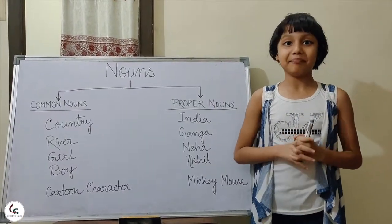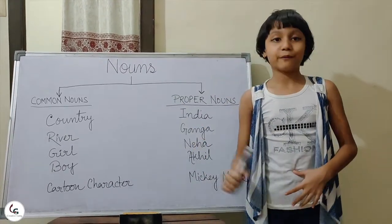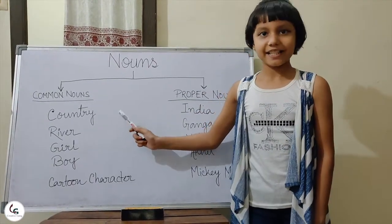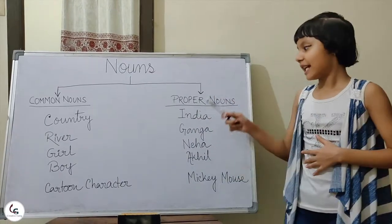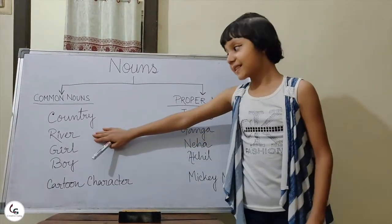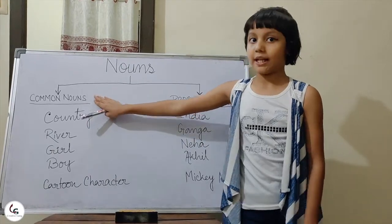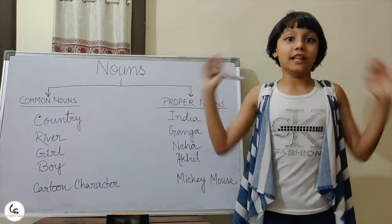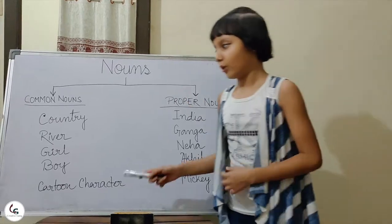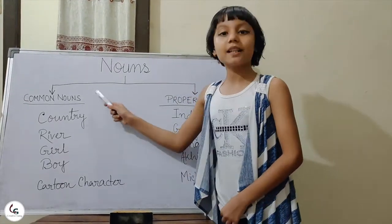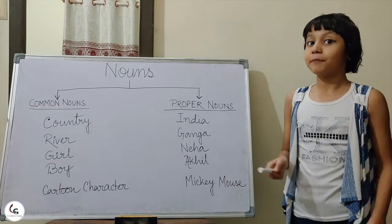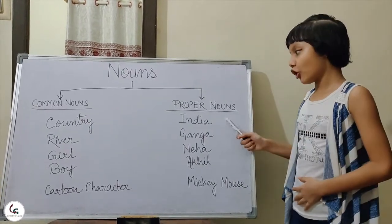Now let's see some examples to know how to differentiate Common Nouns and Proper Nouns. 'Country' is a common noun, but 'India' — our favorite motherland — is a proper noun. 'River' is a common noun, but 'Ganga' — our largest river in India — is a proper noun. 'Girl' is a common noun; we don't know which girl it is. But 'Neha' is the name of a particular girl, so it's a proper noun.